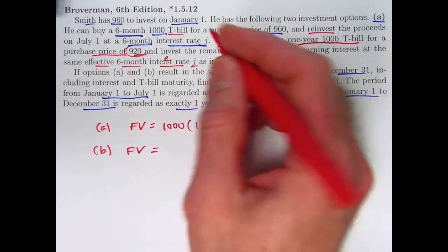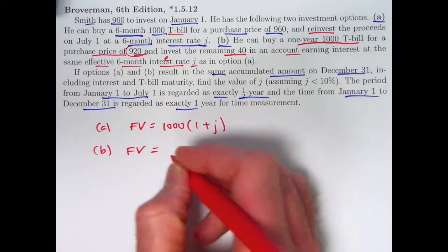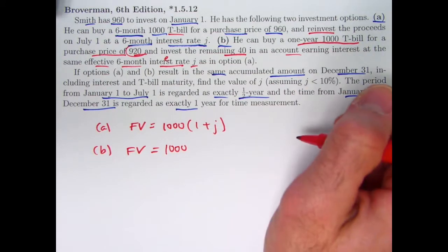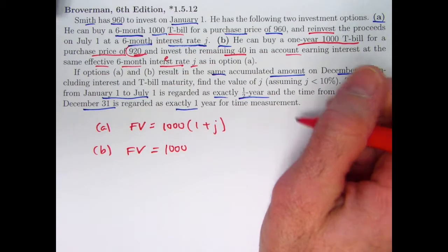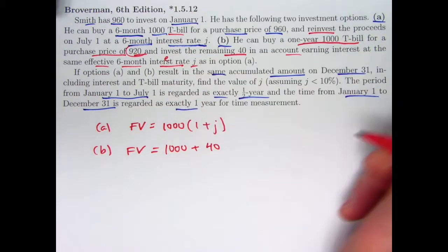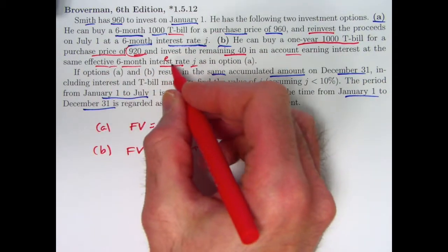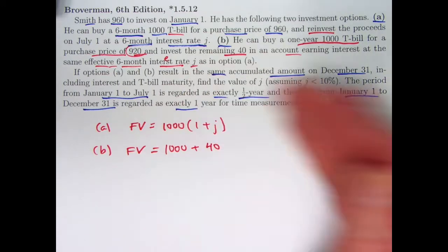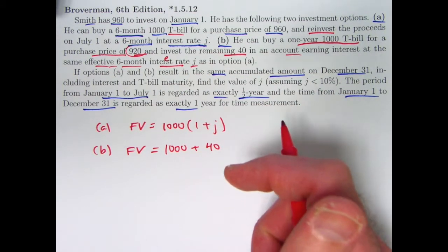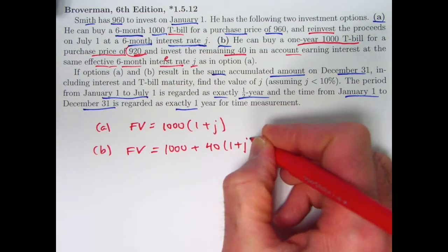For option B, it's the same 960: 920 of it going into this 1,000 T-bill which matures in one year; its future value will be 1,000 exactly, the amount that it's quoted for. The other 40 is invested on January 1st in another account with an effective six-month interest rate J but for two periods, two six-month periods for a full year, so instead of multiplying by 1 plus J, I need to multiply by 1 plus J squared.